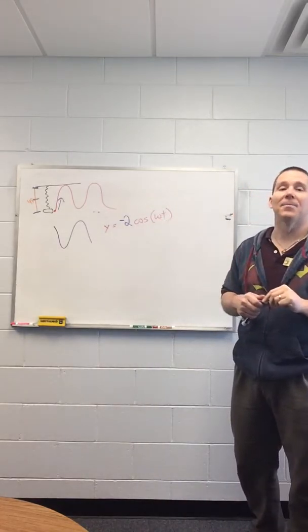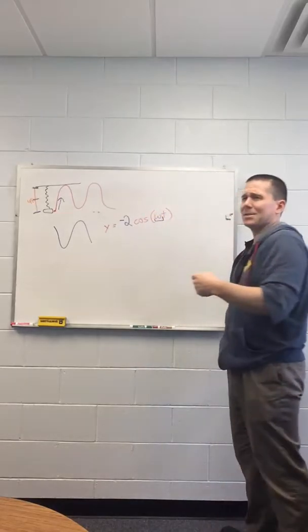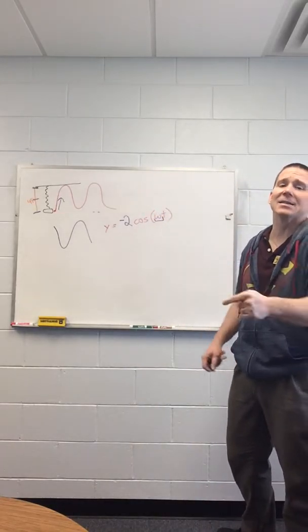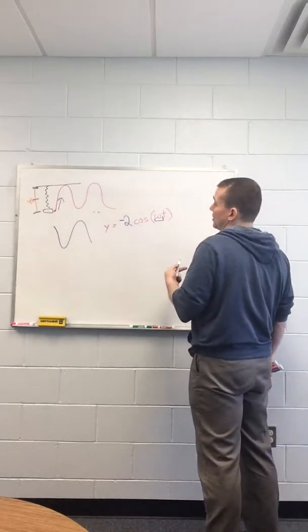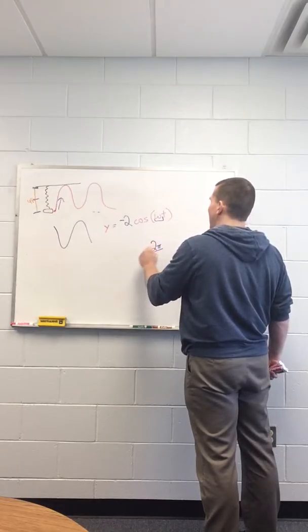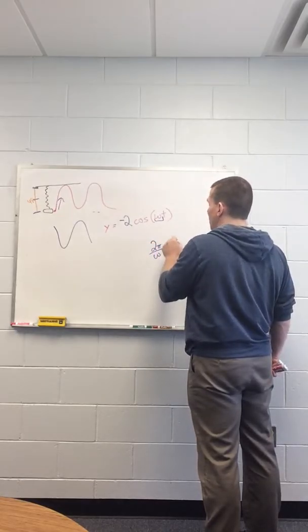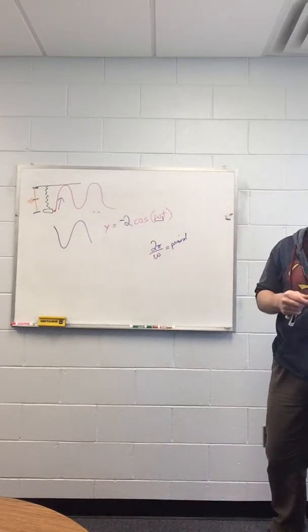Now we just need to find omega. That's just how my period gets changed. That's how we did it before when graphing sine and cosine functions, trig functions. And the rule was 2 pi over omega equals your period.